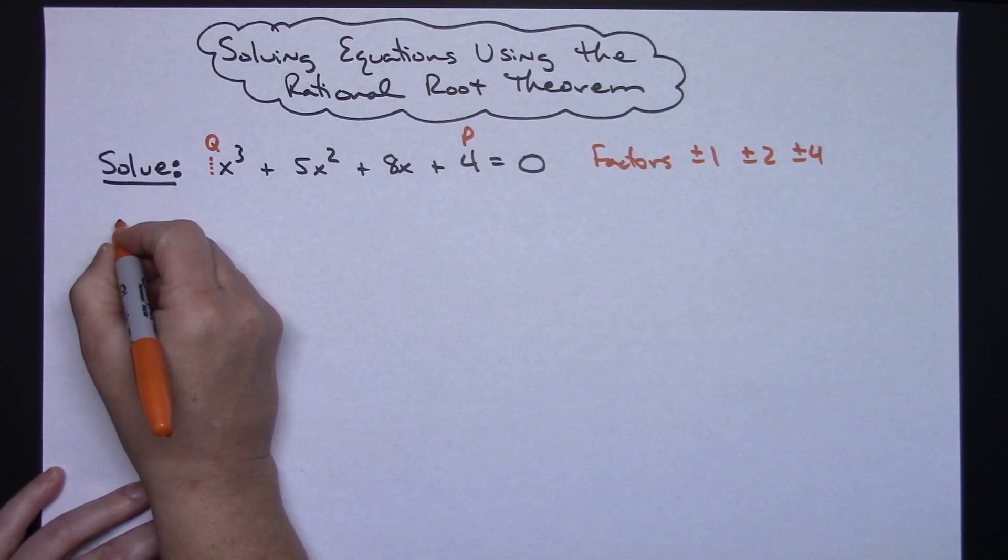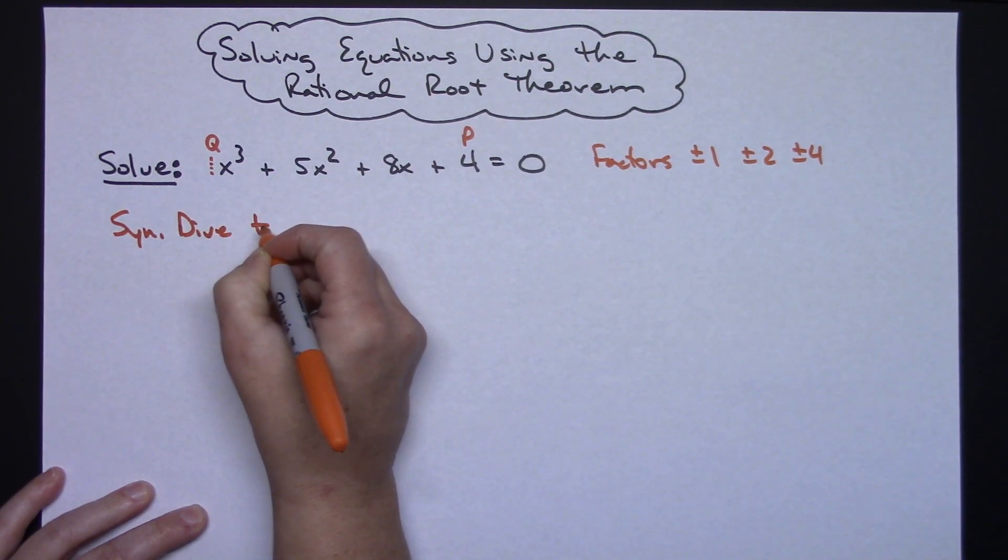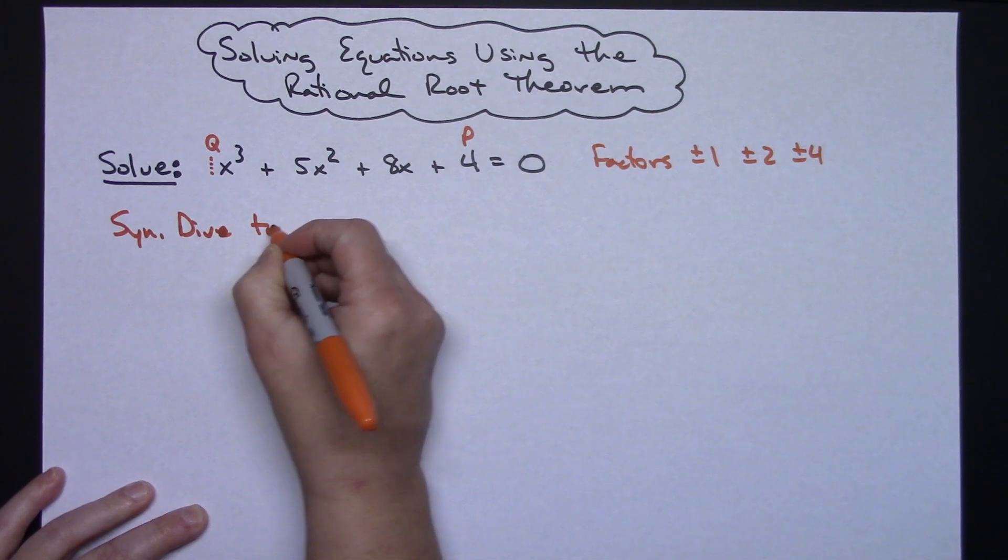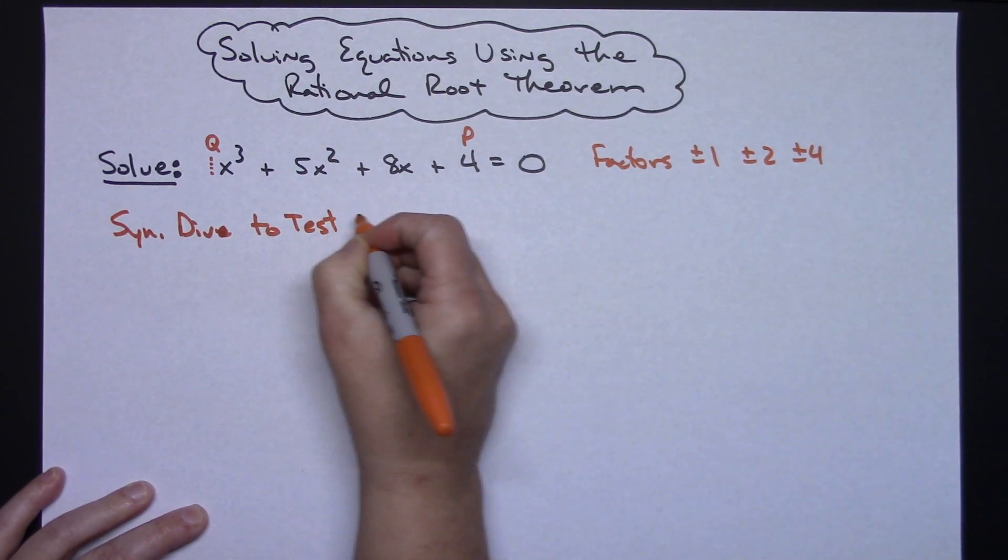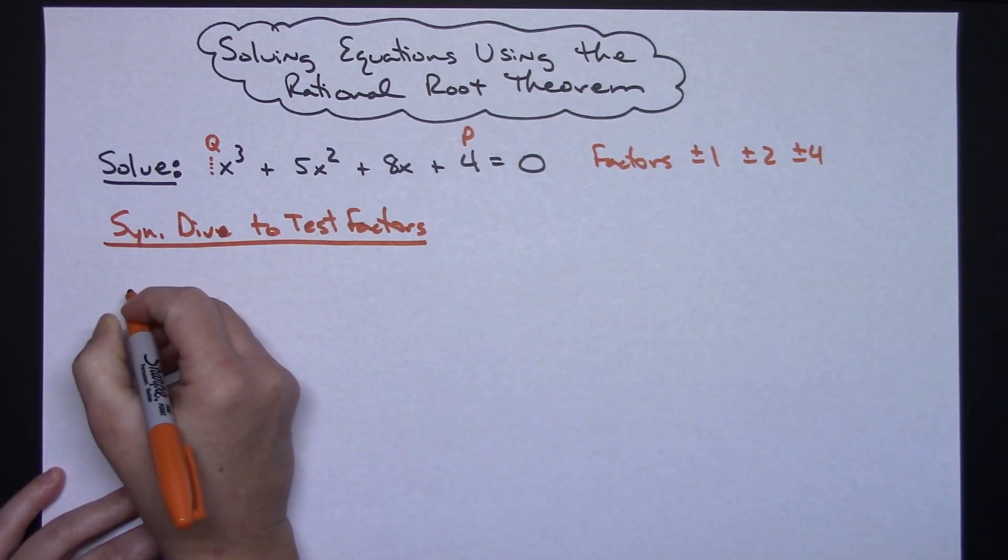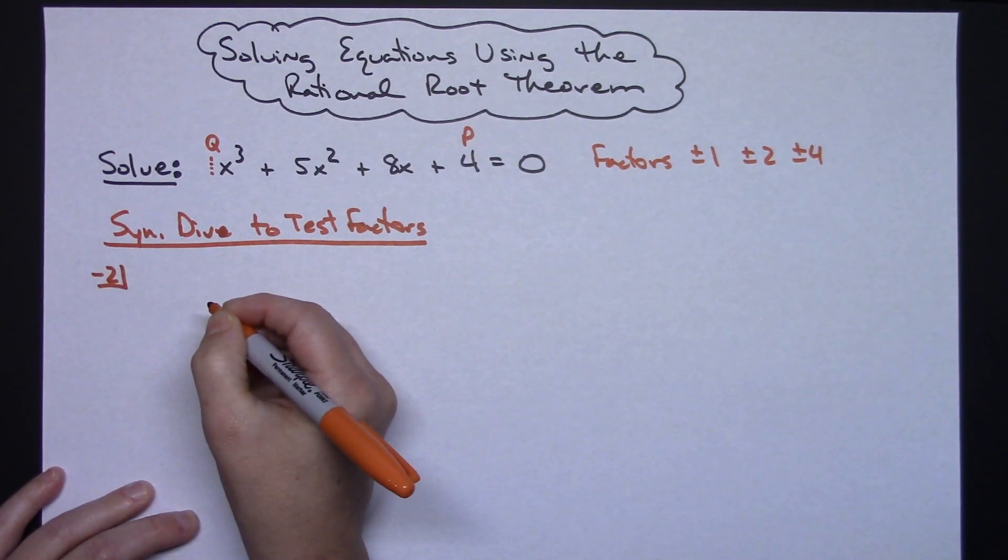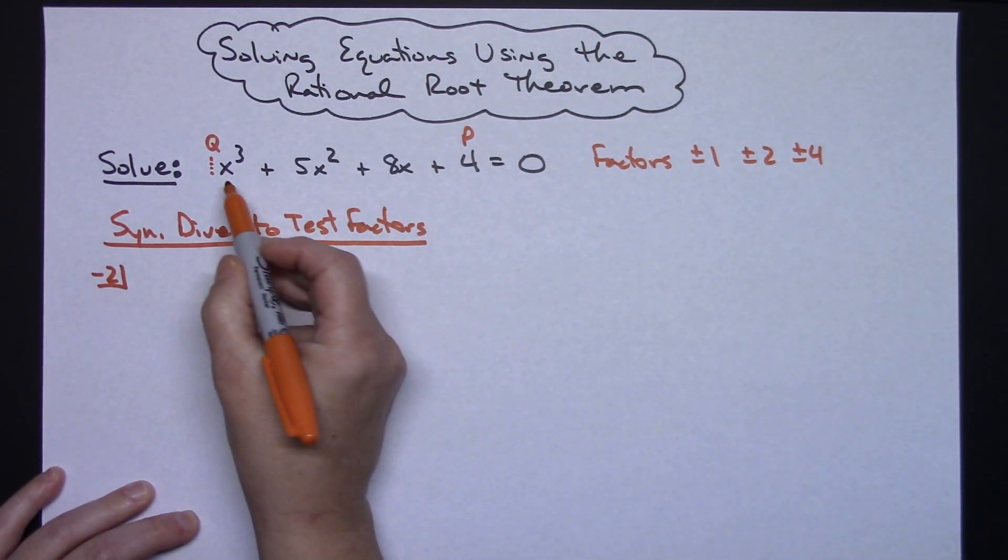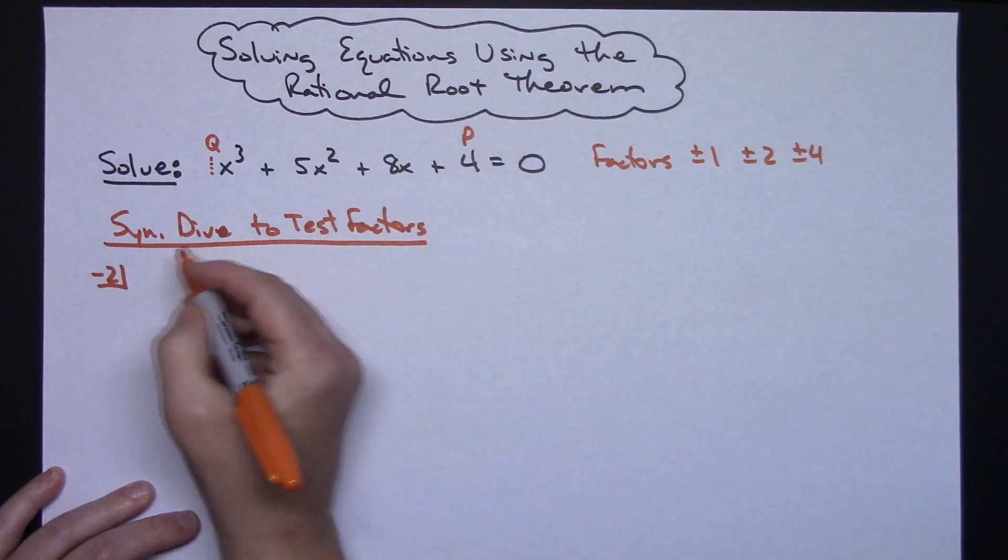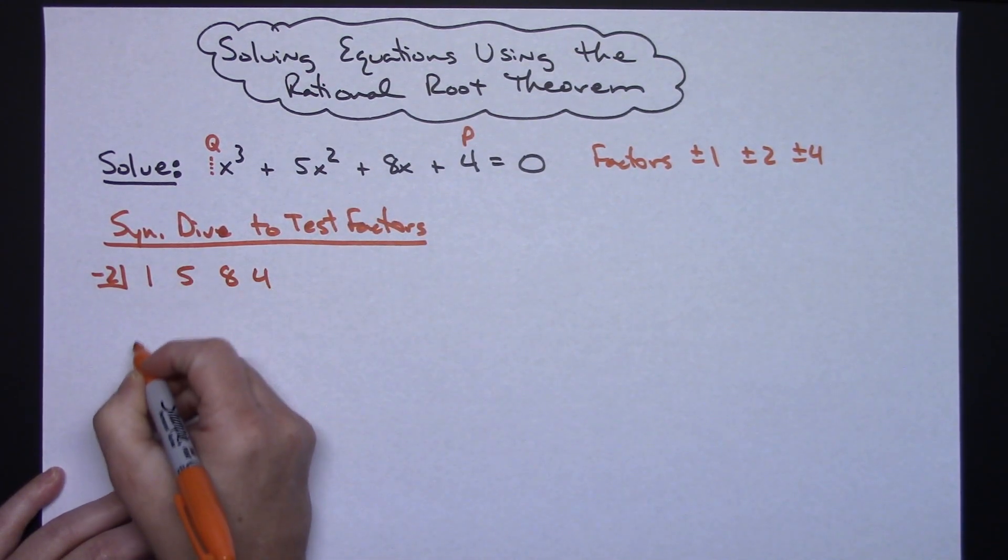So I'm going to use synthetic division. So let's go synthetic division to test factors. I'm going to use synthetic division to test my factors, and I'm going to try negative 2 because I really think that one works on this one. Now synthetic division coefficients out of here. So 1, 5, 8, 4.